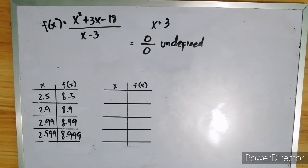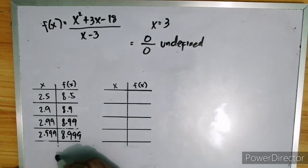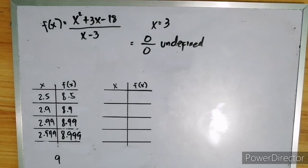If you notice, as x approaches 3, the value of the function is getting closer and closer to 9. Okay, how about from the right side of 3?